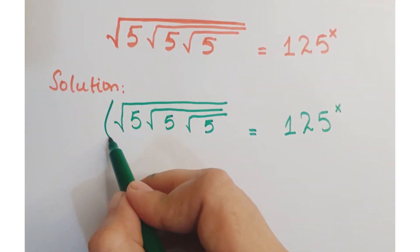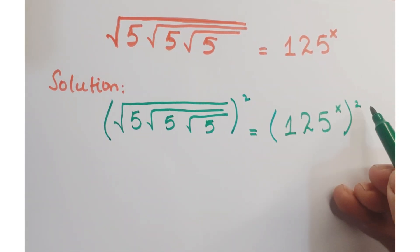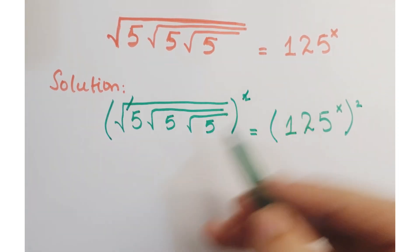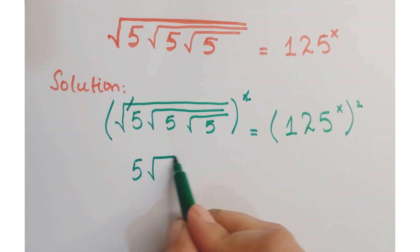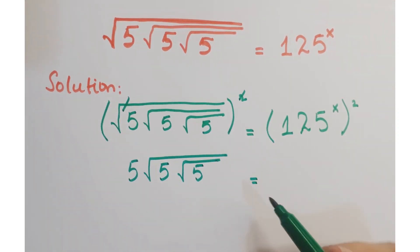Now, in order to eliminate this square root from the left hand side, we are going to apply squaring both sides. So this root, this square gets cancelled. So we get 5 under root 5 under root 5 equals...